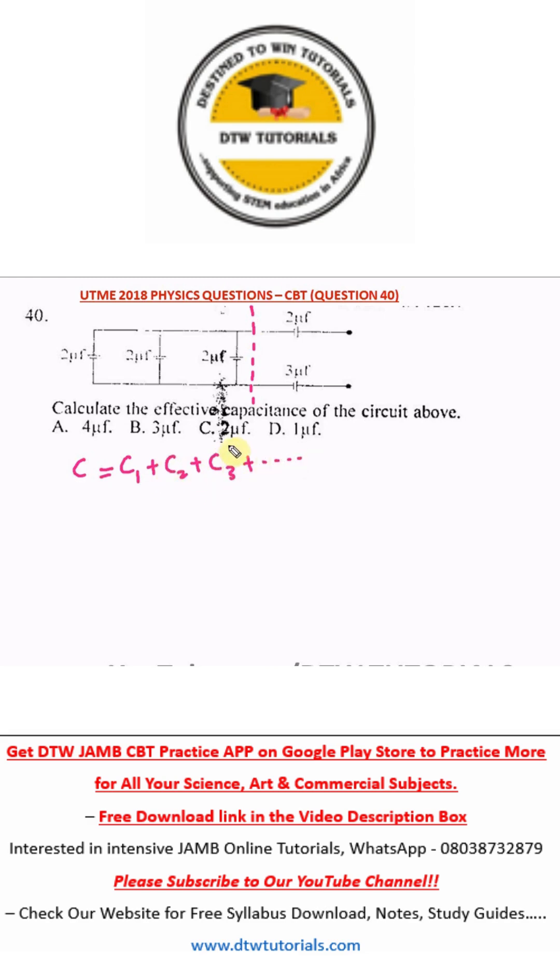Remember it is different from your resistors. To calculate the total resistance of resistors in parallel, remember 1 over R is equal to 1 over R1 plus 1 over R2 plus 1 over R3. So don't get confused. When it comes to calculating the effective capacitance of a parallel circuit, you simply add them up.